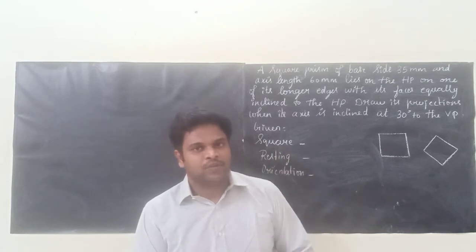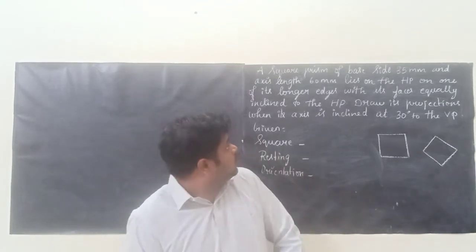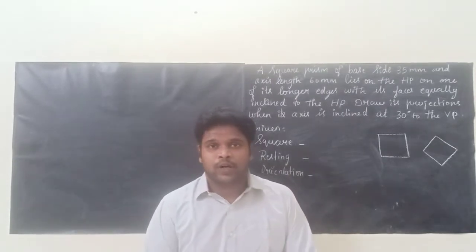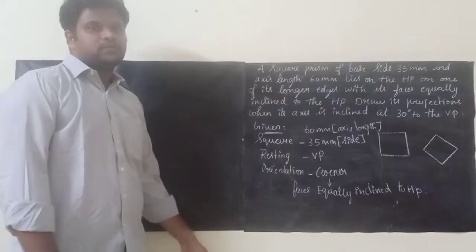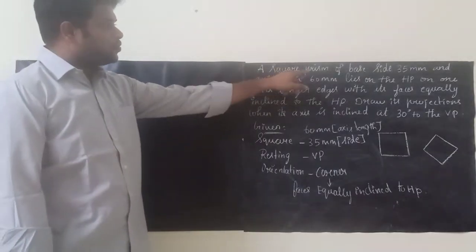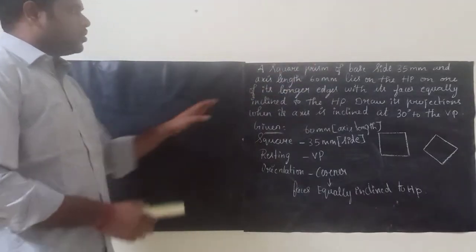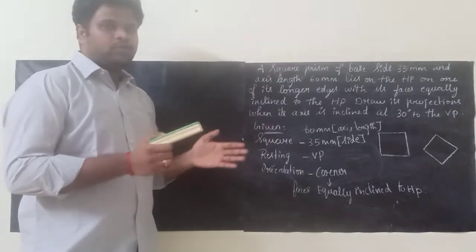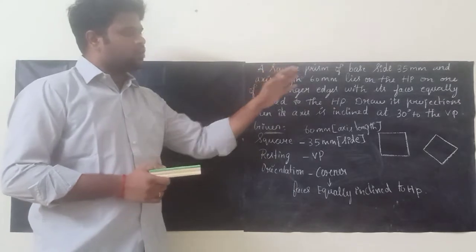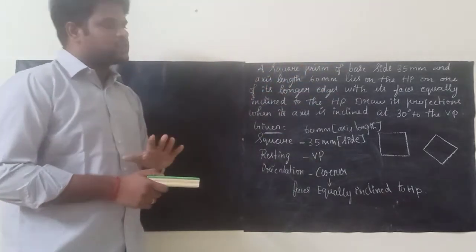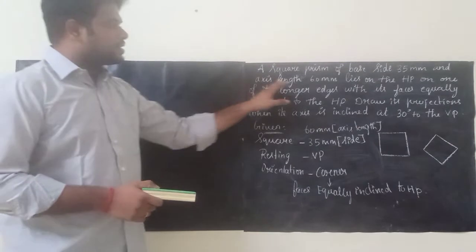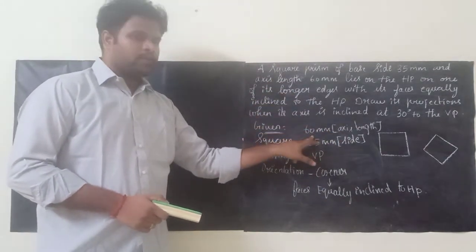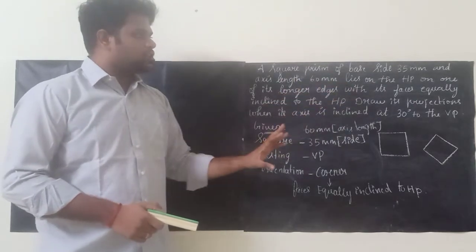The problem we are going to see is a square prism. I will be explaining the question, giving the data, and telling how to draw the diagram step by step. A square prism of base side 35mm — the base diagram will be a square with all four sides equal to 35mm. The axis length is 60mm, which is the height of the prism. It lies on the HP.